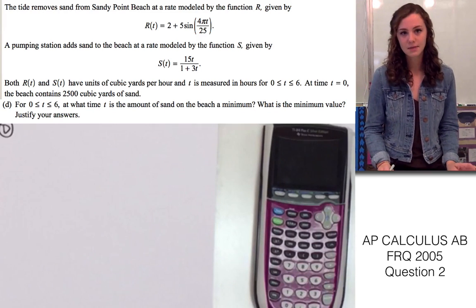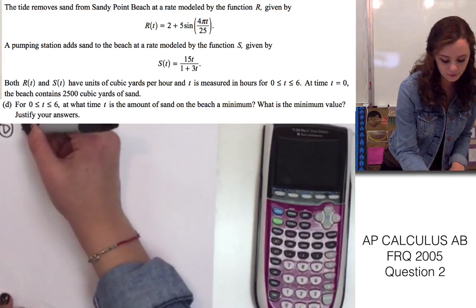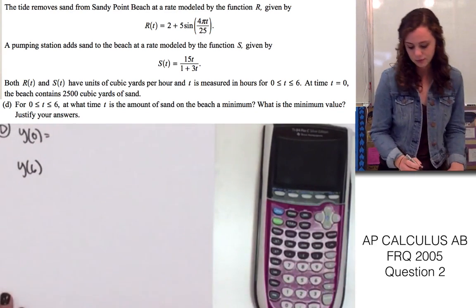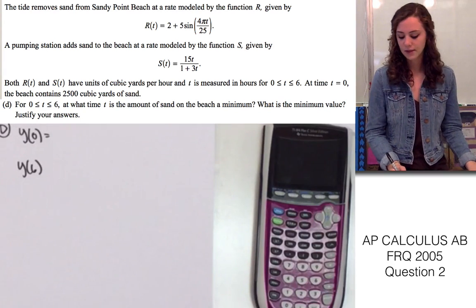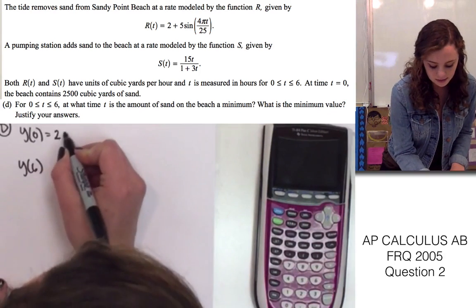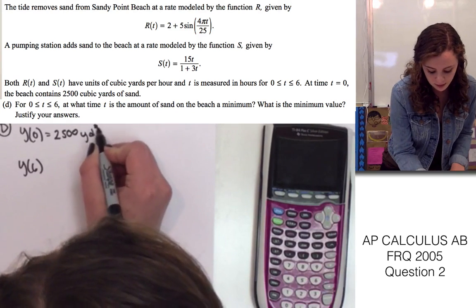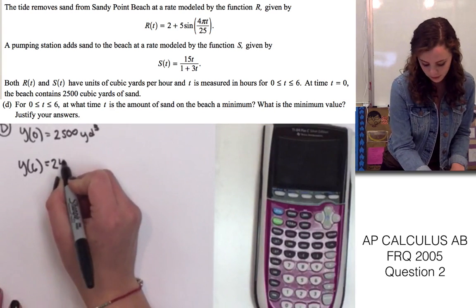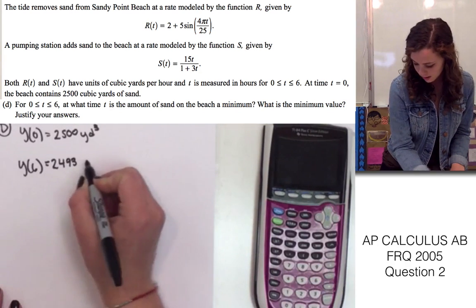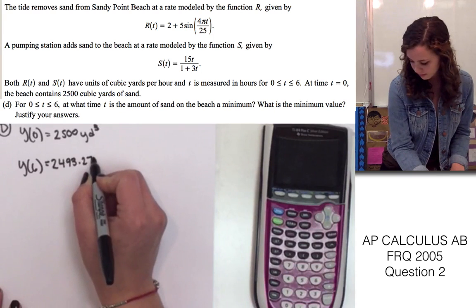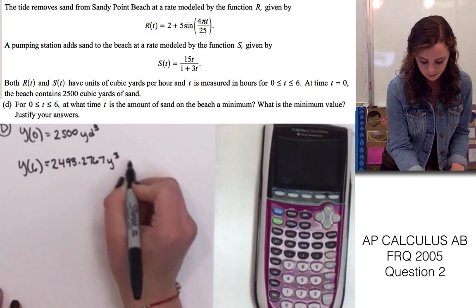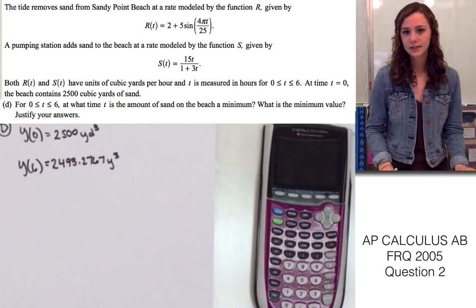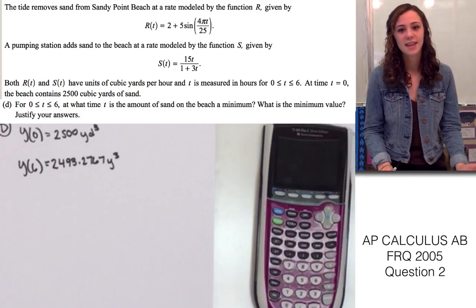Since it could be at the minimum at 0 or at 6, we need to find for y of 0 as well as y of 6. We just plug 0 in for the equation that we found in part B, and we end up with 2,500 yards cubed. And when we plug 6 into that same equation, we end up with 2,493.2767 yards cubed. Now that we know the values at y equals 0 and y equals 6, we need to find the critical number just to make sure that that is not the minimum.